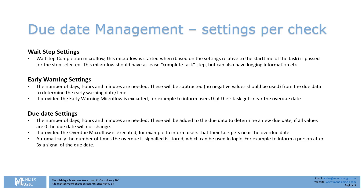Early warning settings subtract days, hours, and minutes from the due date and set an early warning indication. If a microflow is added, it's executed — useful for signaling users that they have an early warning activity or notifying a queue manager. For overdue settings, when the task is overdue you can reset the due date by a number of days, hours, and minutes, and you can signal based on the number of times the overdue setting has run — a counter tracks how many times the due date has been passed on a specific activity.